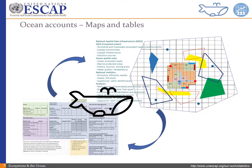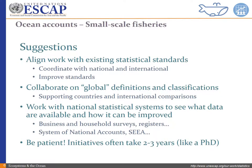We found that with ecosystem accounting in general, maps and tables need to inform each other — we can use maps to create tables, and tables to create maps. Some people think more spatially; some information comes from maps. We need to bring the maps together with the tables. Ocean accounts is the beginning of that blueprint, and this is very well covered in the background paper by IIED. So what does it all mean for small-scale fisheries?